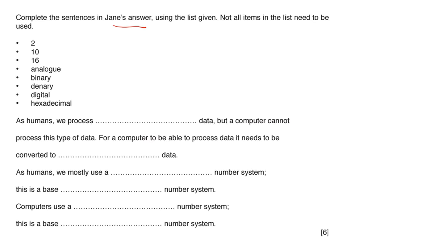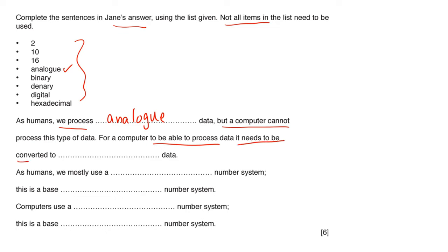Complete the sentence using the list given; not all items need to be used. As humans, we process analog data, so the first blank is analog. But a computer cannot process this type of data — for a computer to process data, it needs to be converted to digital. As humans, we mostly use the denary number system, which is a base-10 number system. Computers use the binary number system, which is a base-2 number system.